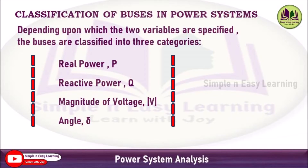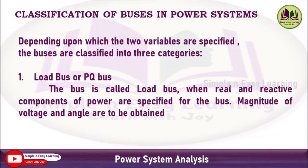Based on the specified variables, we classify the bus into three categories. The first one is a load bus, also called a PQ bus, meaning P and Q are specified for that particular bus. The bus is called a load bus when the real and reactive components of power are specified, and voltage magnitude and delta are to be obtained.